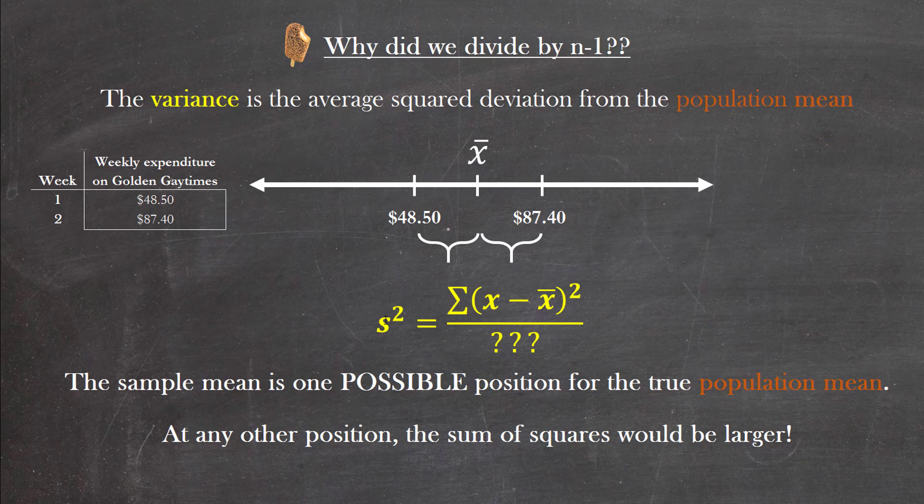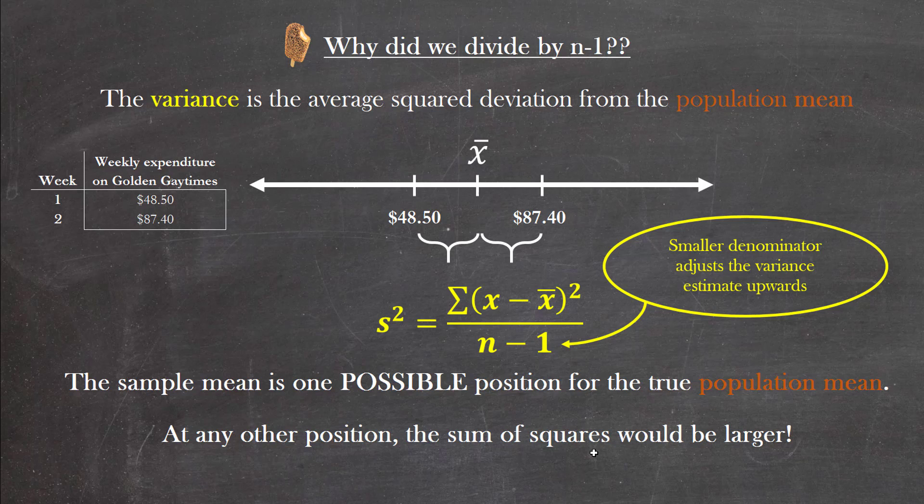So we have to take account of that. Otherwise our estimate for the true variance will be less than it should be. So by dividing by n minus 1 instead of n, appreciate that the denominator is decreased so our estimate actually increases. Smaller denominator adjusts the variance estimate upwards, and that's to account for the fact that we've used an approximation of the population mean when we used the sample mean.